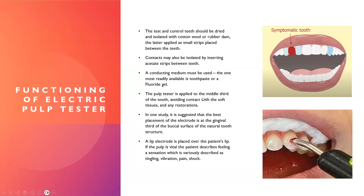The probe is applied to the middle third of the tooth, avoiding contact with soft tissues or restorations. However, one study suggests the best electrode placement is at the gingival third of the buccal surface of natural tooth structure, especially in elderly patients where the coronal pulp has receded due to secondary dentin deposition. A lip electrode is placed on the patient's lip. If the pulp is vital, the patient describes a tingling sensation, vibration, pain, or a typical electric shock feeling.